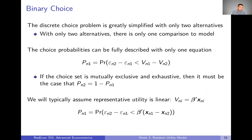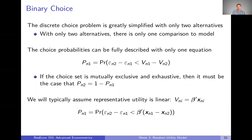It turns out that the choice probabilities can be fully described with only one equation. For example, the choice probability P that decision maker n chooses alternative one is the probability that the difference between the unobserved random error terms is less than the representative utility. And if our choice set is mutually exclusive and exhaustive — which it has to be — then the choice probability for alternative two is just one minus the choice probability of one.